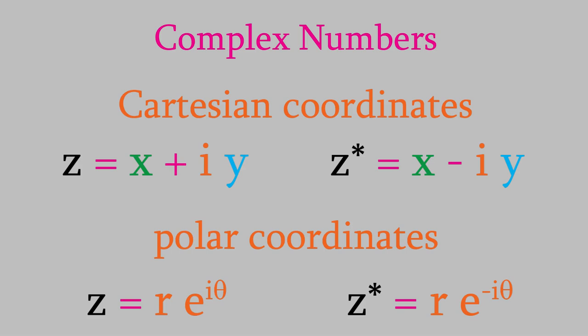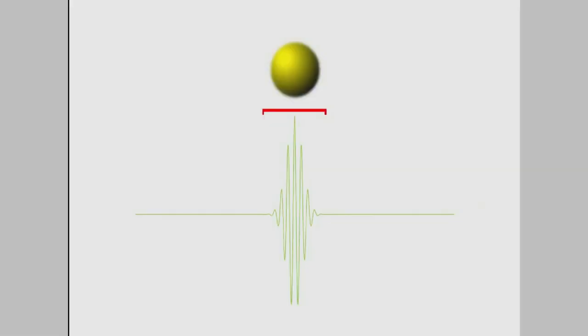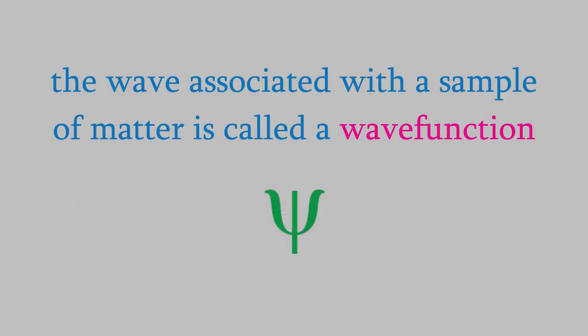So why did we spend so much time on complex numbers? Remember that particles like electrons have characteristics of waves. To understand the behavior of atoms and molecules, we need to understand those waves — and it turns out the waves are often described by equations that include imaginary numbers. The equation for a wave associated with matter is called a wave function, usually given the symbol psi (ψ).